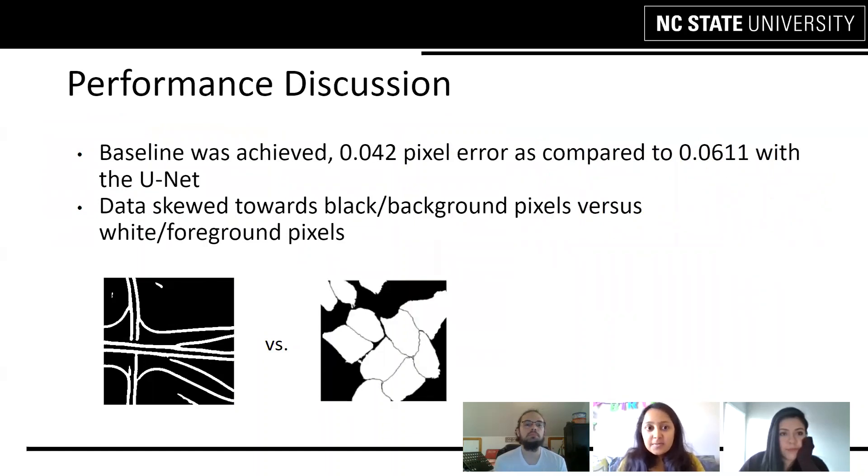If we have to discuss the performance, our baseline was achieved. We got a pixel error rate of 0.042 as compared to 0.0611 with U-Net. 0.0611 was what was there in the reference tool. The data is skewed towards black background pixels versus white foreground pixels.